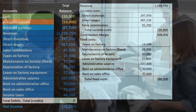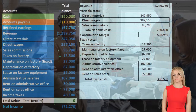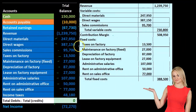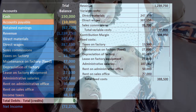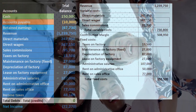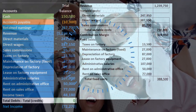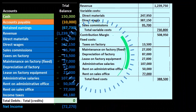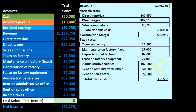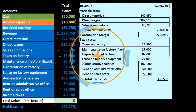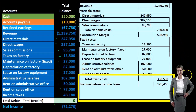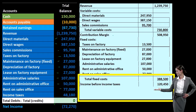Direct materials and direct wages appear near the top of both statements, but for different reasons — by behavior here, and by function there. Similarly, administrative and sales costs that appear on a normal income statement are usually fixed, so they also appear in the fixed costs section here — not because they're grouped as operating or selling-and-administrative expenses, but because they happen to be fixed. So you might see costs in similar locations on both statements just because they happen to behave similarly, not because of any shared categorization.